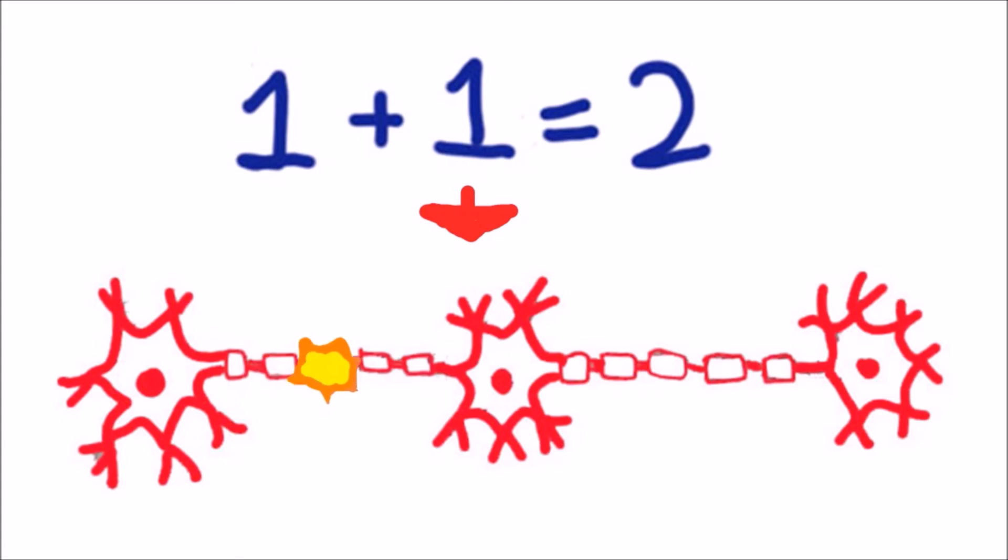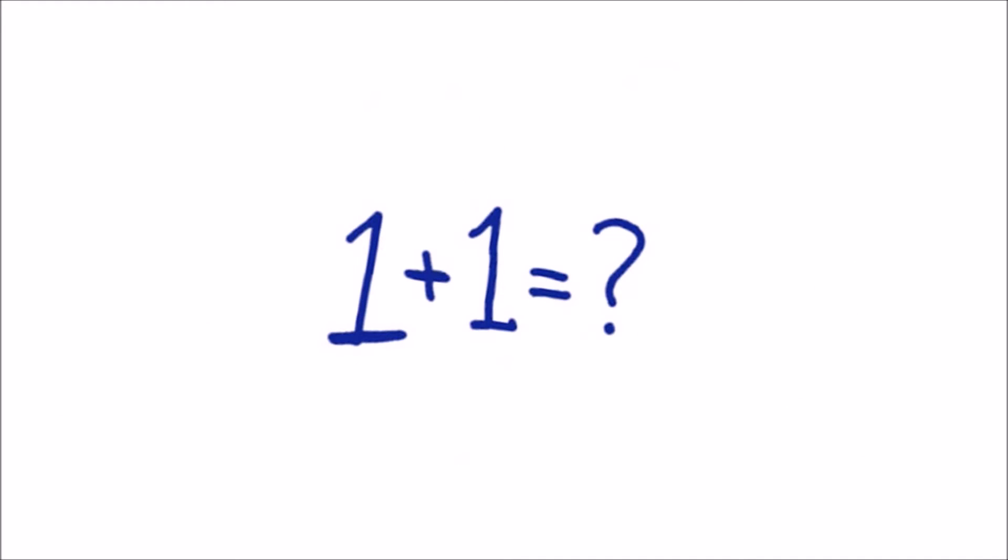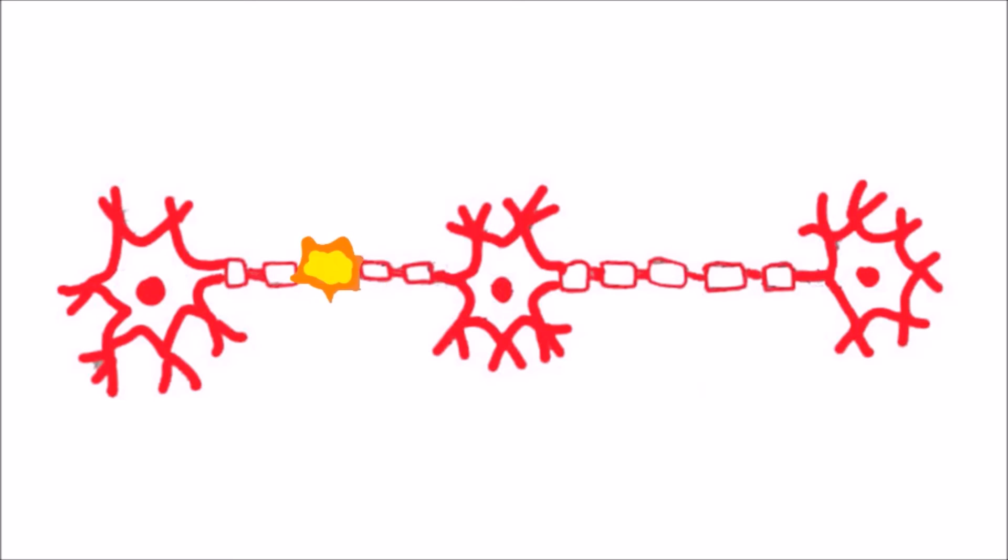Because you encounter math problems a lot, your brain encodes this into long-term memory. And every time you are reminded of 1 plus 1, the brain automatically retrieves the answer 2 by firing through the root of neurons.